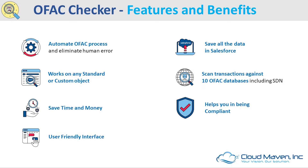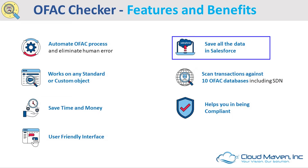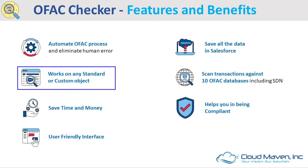We will now look at the features and benefits of the OFAC Checker app: automate the OFAC process and eliminate human error, save all the data in Salesforce linked to the related record, and works on any standard or custom object.